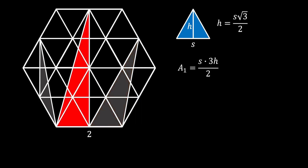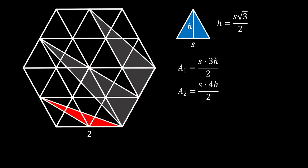Next, let's have a look at our middle triangle. This triangle also has a base equal to the base of the equilateral triangle, so we will label it as s. And the height of this triangle will be equal to 4 times the height of one equilateral triangle, so we can calculate its area as s times 4h over 2. And finally, let's have a look at the triangle on the left. In order to understand this a little bit better, we will first rotate our image. Then you can see that the base of this triangle is also equal to s, and the height of this triangle will be equal to h. So the area of this red triangle must be equal to s times h over 2.